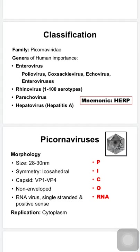Looking at the morphology of picornaviruses: the size is just 28 to 30 nanometers, which we can remember with the first alphabet P in the name. The symmetry is icosahedral. The capsid has 60 subunits and each subunit has four viral proteins: VP1, VP2, VP3, and VP4. VP1 to VP3 are surface proteins which help in attachment and antibody binding, while VP4 is the internal protein associated with the nucleic acid.